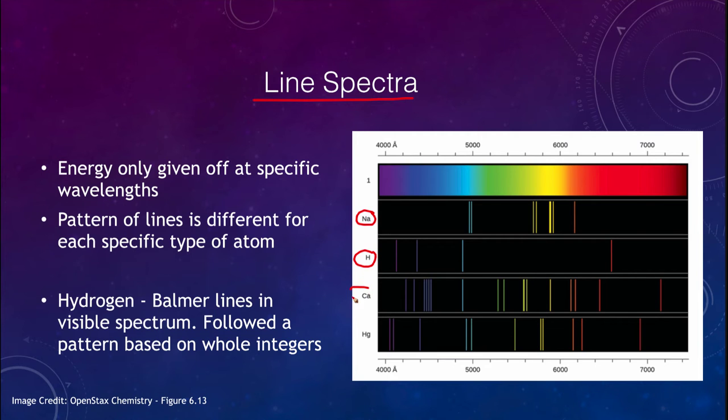Sodium gives us a specific pattern of lines, hydrogen gives us another pattern, calcium, mercury. Each has similar colors but the pattern, the fingerprint that we see, are never exactly the same for any two atoms. This is how we can identify what substances are made of without analyzing them directly. We could look at the pattern of lines in a star and determine what elements were present.